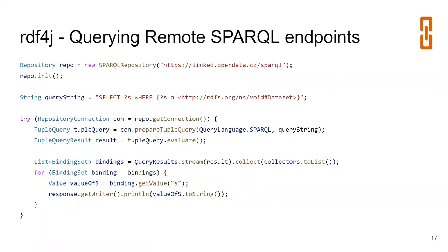The final example of the Repository API is querying a remote SPARQL endpoint, which is the example we'll start with in the next tutorial.